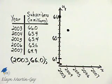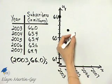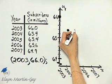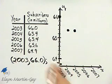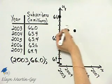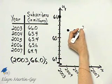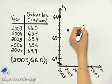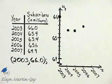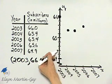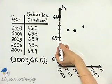For 2005, notice we have the exact same number of subscribers rounded in millions anyway. For 2006, it's 65.6, so here's 65.2, 65.4, 65.6 — there's 2006. And then 2007 is 64.9, so here's 64, then .2, .4, .6, .8, and nine tenths would be right here.